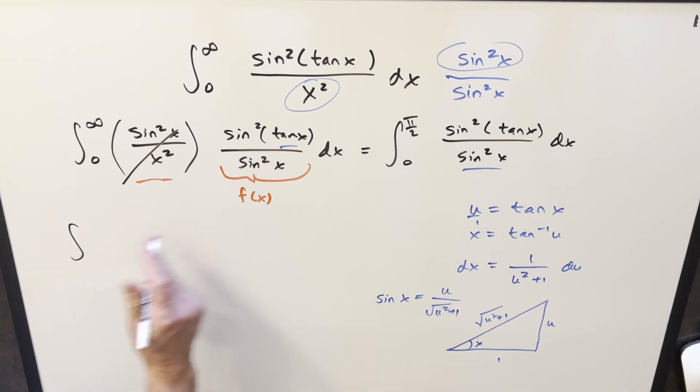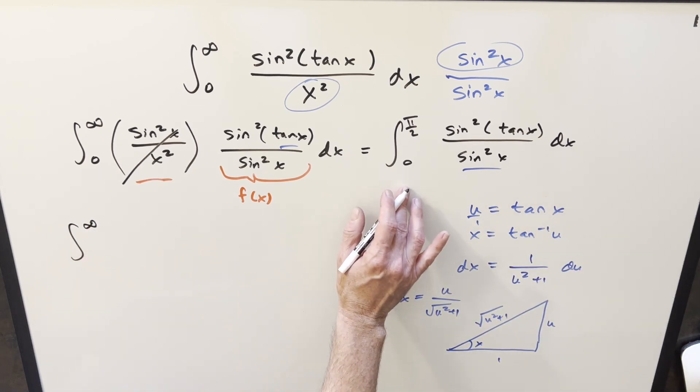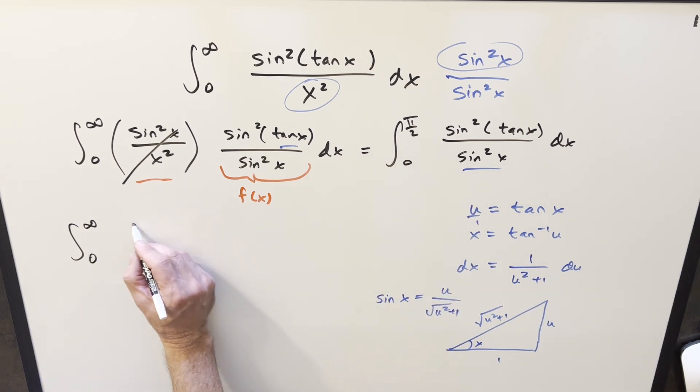Go ahead and substitute it. Plug in pi over two here. Tan pi over two is happening at infinity. Plug in zero. Tan of zero is just zero. Then in the numerator, this is just going to become sine squared of u. Our sine squared value, we just need to square this. So when you square this, you're going to get u squared over u squared plus one.